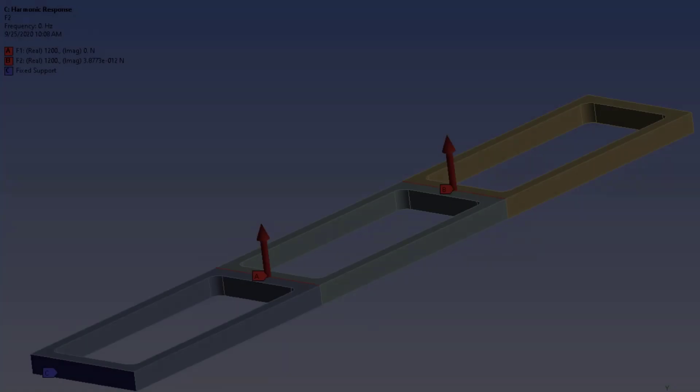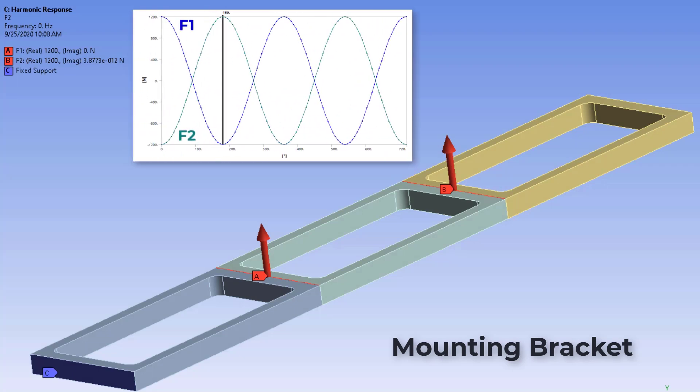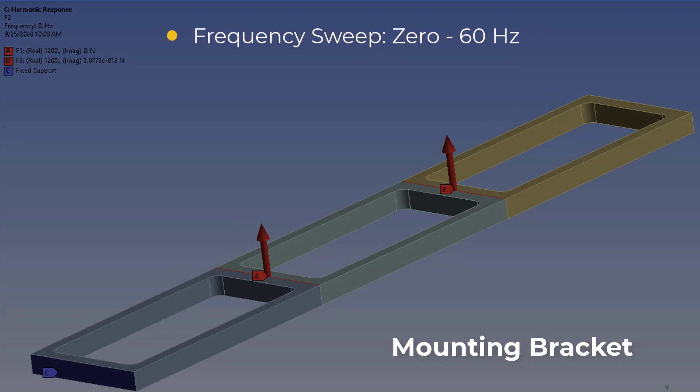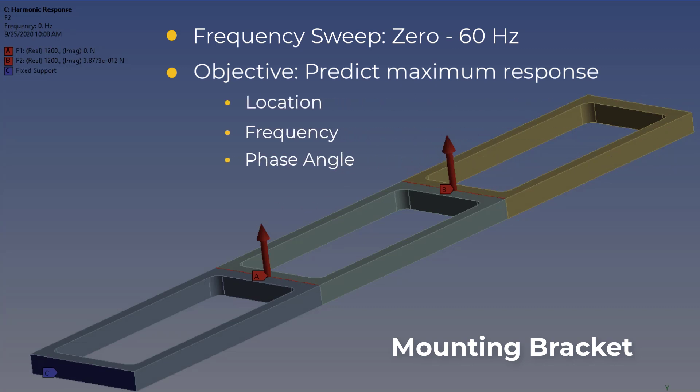Now let's move to a harmonic simulation and start to evaluate its results step by step. We have here a model of a mounting bracket designed to support two masses that impose sinusoidally oscillating loads at different locations and out of phase by 180 degrees. We examine the results for a frequency sweep from 0 to 60 Hz. Our objective is to predict the location, frequency and phase angle of the maximum response and the corresponding stresses. We do all this with a mode superposition harmonic analysis.